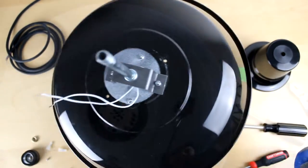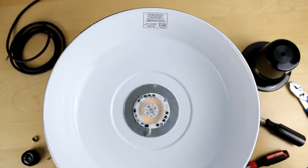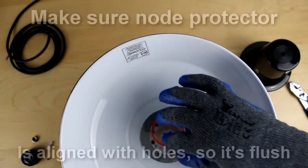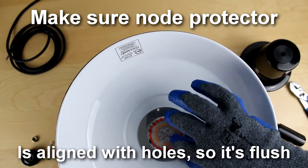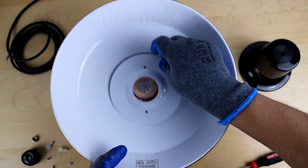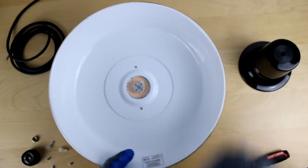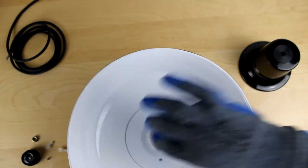Once we have hand tightened the nuts with pliers, we will have to flip the shade back over and place the node protector onto the LED array. Make sure the node protector is aligned with the holes so it is flush. Once it is flush, we will put the cover plate on and make sure the holes are aligned with the shade.